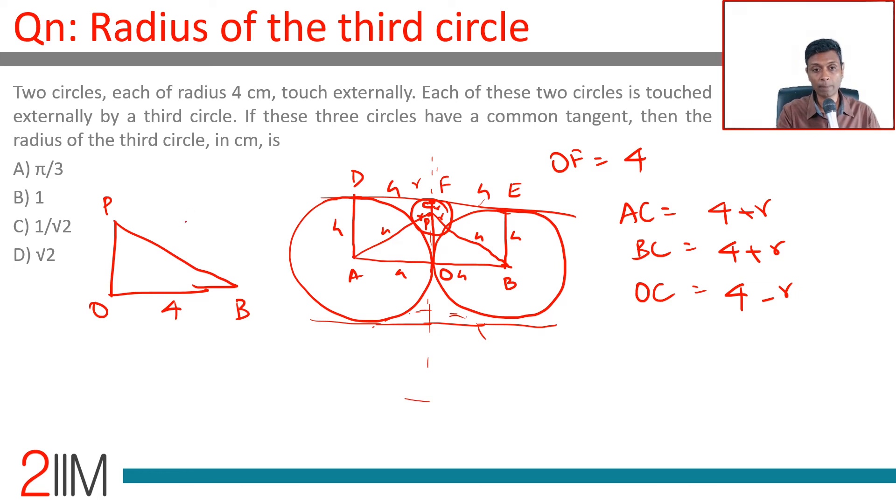OB is 4, PB is 4 plus r, OP is 4 minus r. Here: 4 minus r whole square plus 4 square equals 4 plus r whole square.